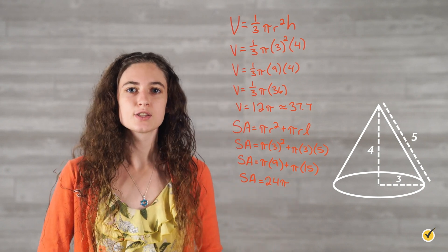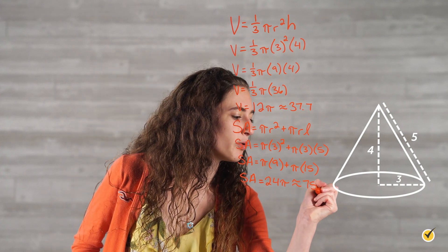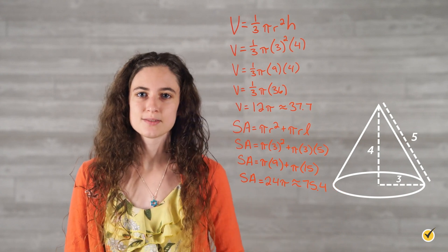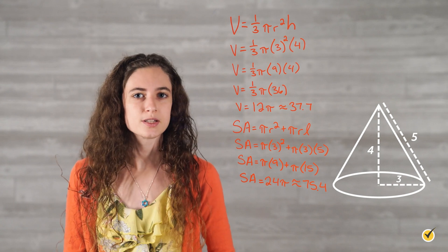In the end, we'd say that the surface area is 24 pi, or approximately 75.4 square units. Notice the way that's measured. Since we are talking about area, we use square units.